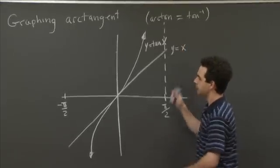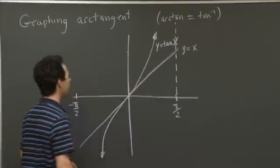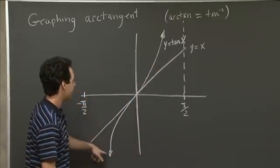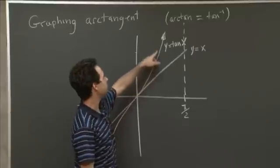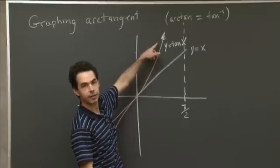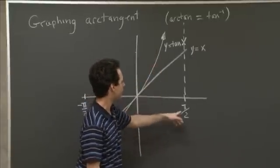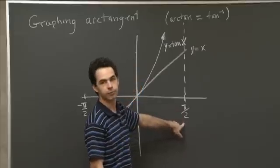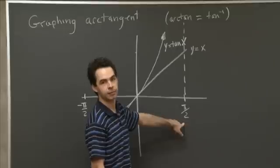Now I've got a graph set up here. And what I've graphed are the lines y equals x. That's this diagonal line. And the graph y equals tangent of x. So that's this curve. And here I've got one of the asymptotes of y equals tangent x at pi over 2, right?